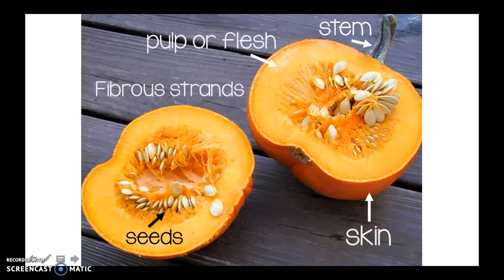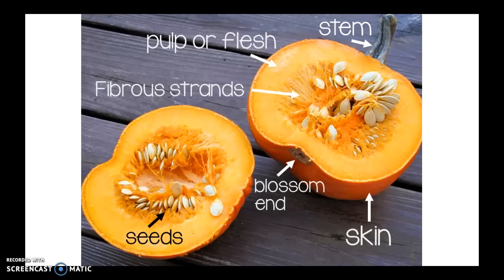Next are the fibrous strands — these are the long stringy things inside the pumpkin. They're very slimy if you touch them. Last is the blossom end. Remember, blossom means flower. A pumpkin, when it grows, does have a flower, just like an apple. That's where the flower dies and turns into a pumpkin.